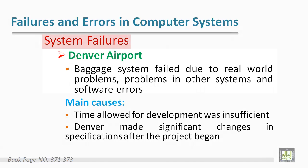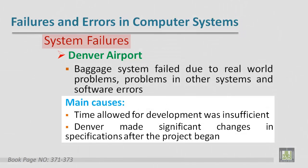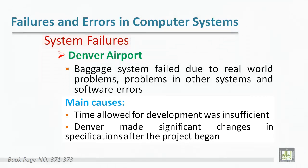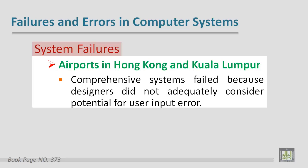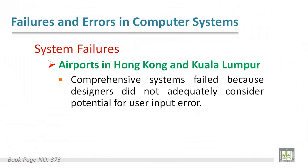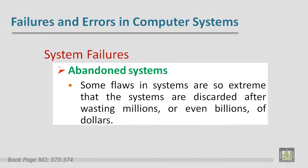An example of system failure happened at Denver Airport in the baggage system. The main cause was insufficient development time, as well as significant changes in specifications after the project began. There were also failures at airports in Hong Kong and Kuala Lumpur, where the problem was the ignorance of some potential issues in user input.